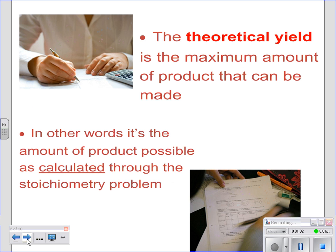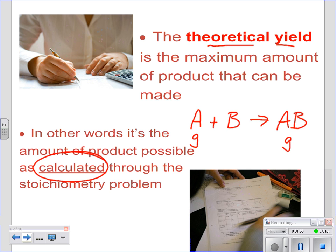Just to reiterate, theoretical yield is the maximum amount of product that can be made. How do we figure that out? We calculate it. Just like we did with stoichiometry, if you were given a reaction and you start with this many grams of A, and in lab you produce this many grams of B, this is your actual. To get your percent yield, you need to calculate your theoretical.